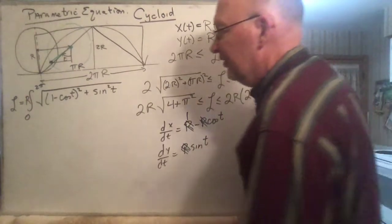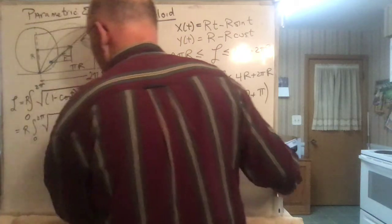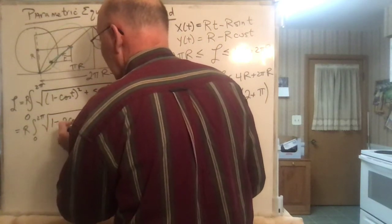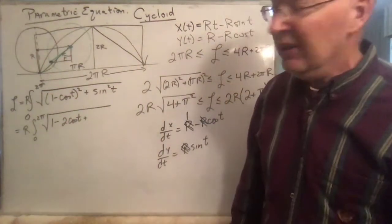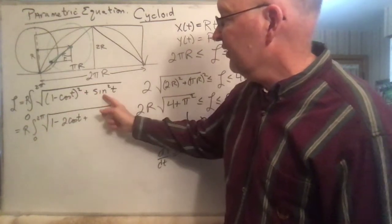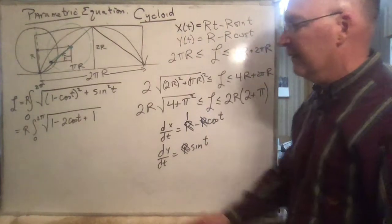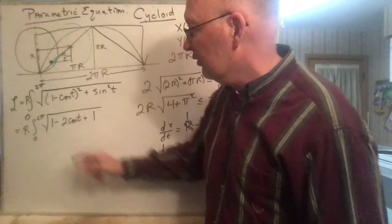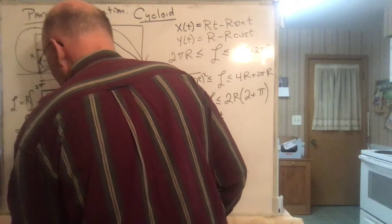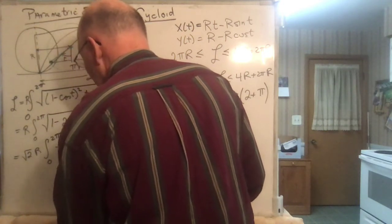Expanding (1 − cos t)² + sin²t gives 1 − 2cos(t) + cos²(t) + sin²(t). Since cos²(t) + sin²(t) = 1, this becomes 1 − 2cos(t) + 1 = 2 − 2cos(t). So we can factor out 2, getting √2 out front, and we're left with R·√2 times the integral from 0 to 2π of √(1 − cos t) dt.